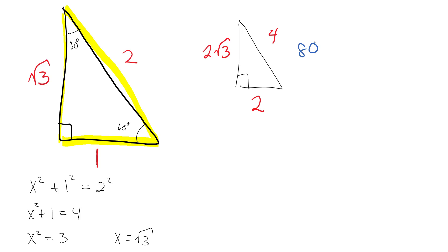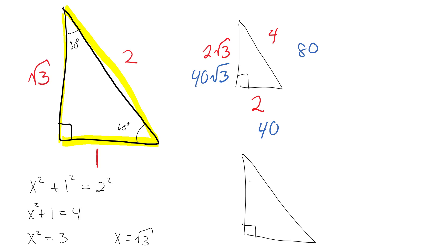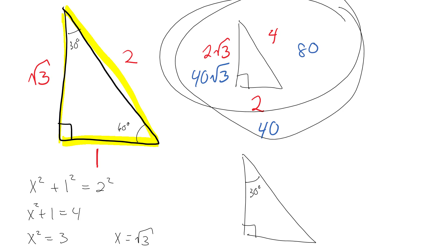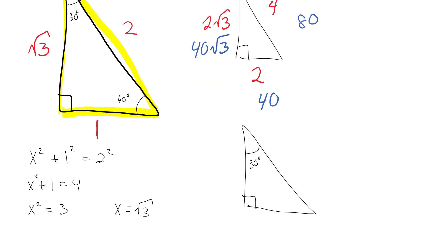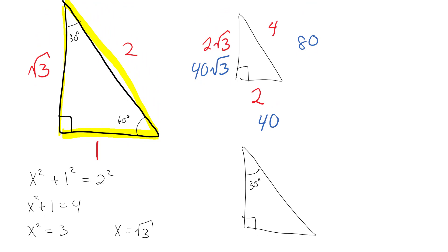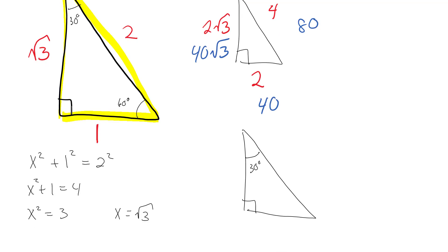If I have two sides I can find the third, but what's even better is if I only know one side and have the angles labeled. If the shortest side opposite the 30° is 5, then the hypotenuse is double that — so it's 10 — and the remaining side is 5√3.